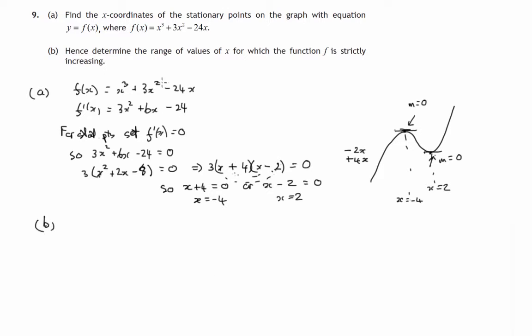So part b. Determine the range of values of x for which the function is strictly increasing. So let's start with the -4, that value of x. And let's look at the gradient formula. We already know that f'(x) is equal to zero when x is -4.